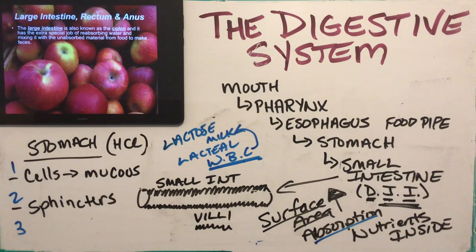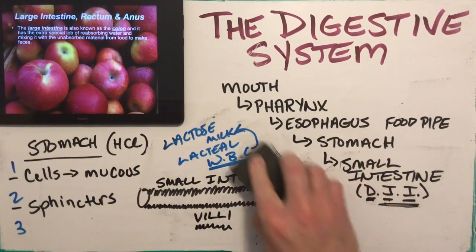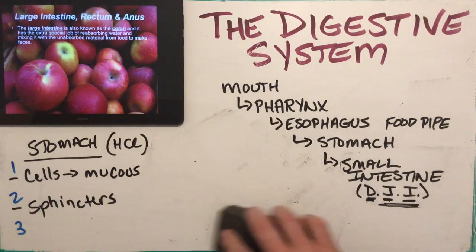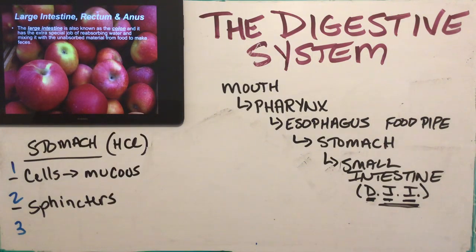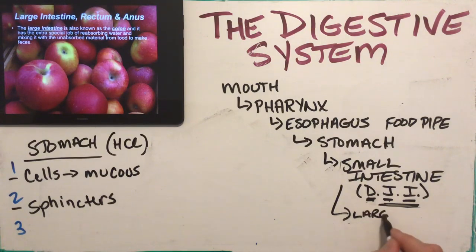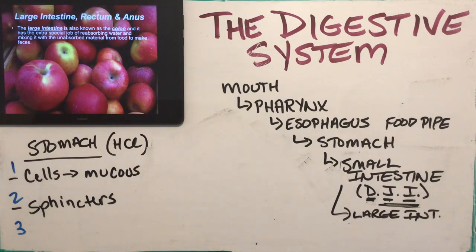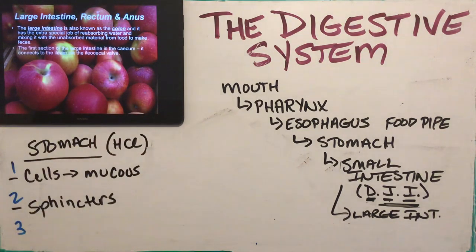Now the good stuff — the nutrients — are inside us. There's only one job left: elimination. We've absorbed the good stuff; now we have to get rid of the bad stuff or the material we're unable to digest, like the cellulose in plant cell walls, which just passes through us and becomes part of poop. From the small intestine we go to the large intestine, also called the colon. It takes the indigestible material and mixes it with water to form feces.